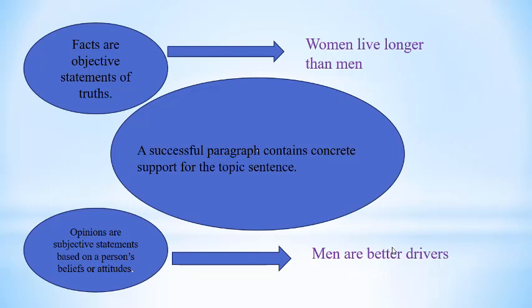A supporting detail must be two things: it needs to be both relevant and factual. If something is factual and accurate but not relevant to the story's main idea, it would be no good. Supporting details must relate to a story's main idea or concept and be accurate.